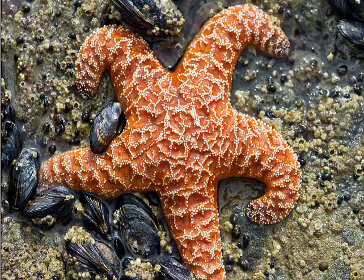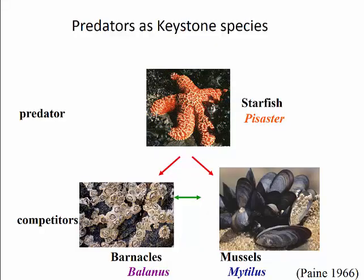Biologists have done many experiments that confirmed expectations for predator-prey relationships, but experimentation has also led to discoveries of ecological relationships that would otherwise have remained hidden. For example, on the rocky shores of the Pacific coast, starfish eat barnacles and mussels. Barnacles and mussels compete for both food and space on the rocks. Because barnacles are more abundant, one might assume that, although the two species live in coexistence, the mussels are the dominant competitor.